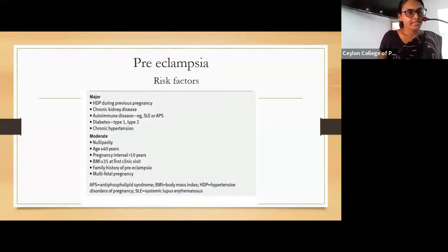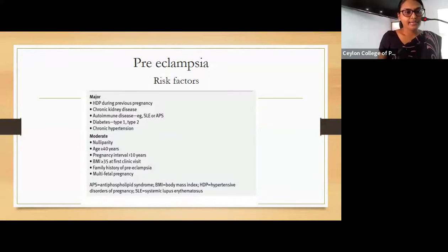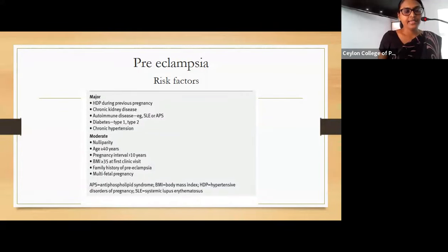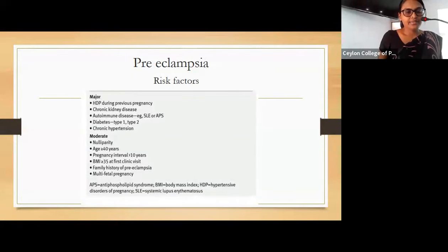Moderate risk factors for preeclampsia include nulliparity, age more than or equal to 40 years, pregnancy interval more than 10 years, BMI more than or equal to 35 kg/m² at first clinic visit — in Sri Lanka, BMI more than 30 is considered a risk factor — family history of preeclampsia, and multiple pregnancy.